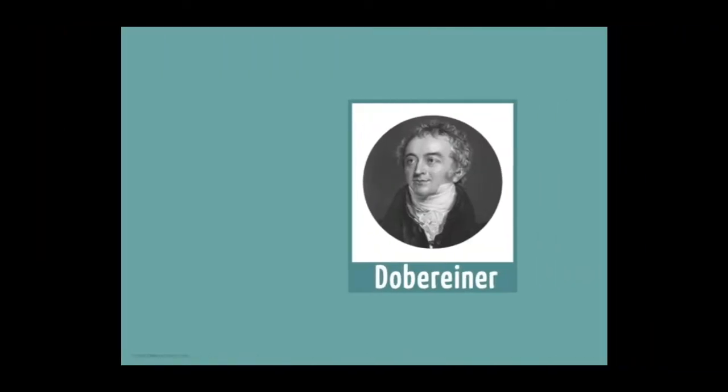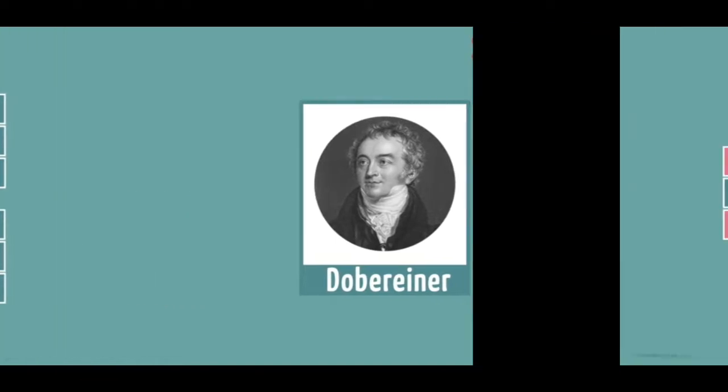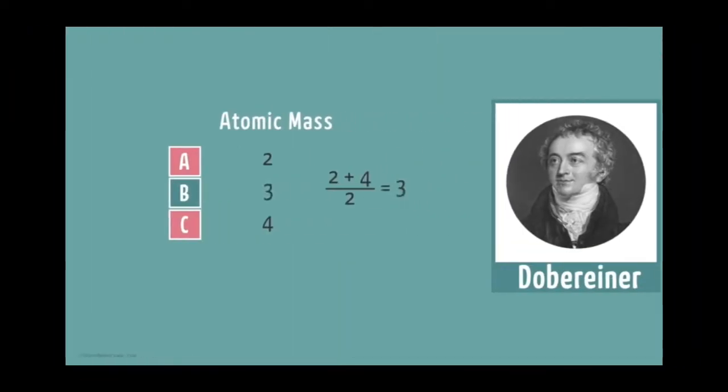In the beginning of the 19th century, a famous German chemist, Dobereiner, attempted classification of elements. He classified the elements known at that time in a particular manner. He placed them into groups having three elements each. Dobereiner arranged a set of three elements in such a way that the average of atomic mass of the first and third element in a set will give the atomic mass of the middle element.